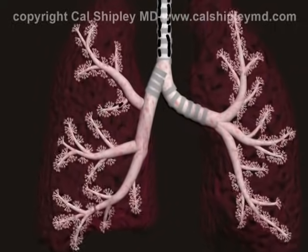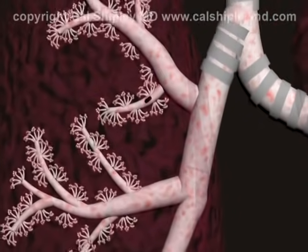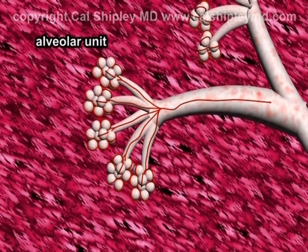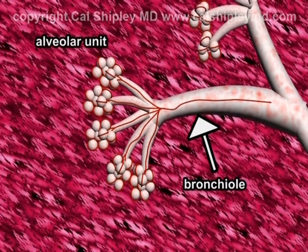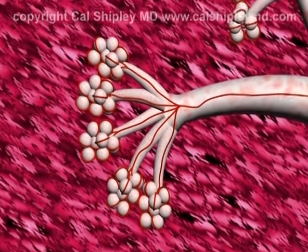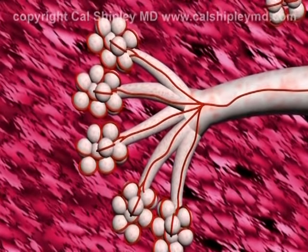Let's take a look at the alveolar anatomy. The alveolus is the smallest functional unit of the lung and is the point at which oxygen molecule transfer occurs into the bloodstream. An alveolar unit consists of a grape-like cluster of several individual alveoli attached to a small airway called a bronchiole. There are approximately 350 million alveoli in each human lung.